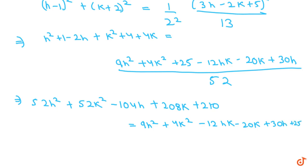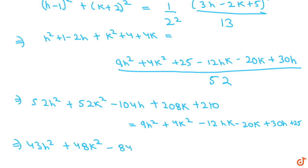If we simplify all the terms by taking everything to the right side, this becomes 43h² + 48k² - 134h plus 228k plus 185 plus 12hk equals 0. Here is minus 104h and here is 30h, so that's minus 134h. Here is 208k and here is minus 20k, so that's plus 228k. And 210 minus 25 gives us 185.